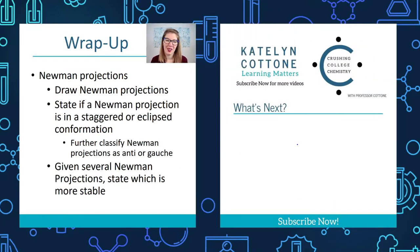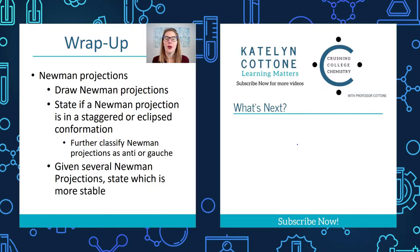In this video, we went through Newman projections and learned how to draw them. You want to make sure that you can label Newman projections as staggered or eclipsed. If your Newman projection is more complex, something like butane, you want to further classify your staggered conformations as gauche or anti. Finally, you want to rank the relative energies of those Newman projections, stating which is going to be the most stable and which is going to be the least stable. As always, thank you for your attention. This is Katoni, signing out.